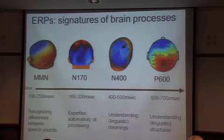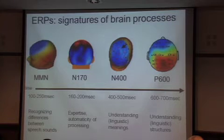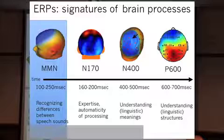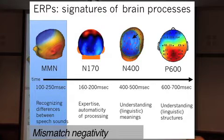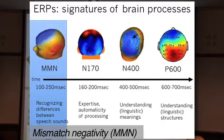These pictures of ERPs have been organized along a timeline that starts when some stimulus is presented. An early ERP — one that happens very soon in the processing stream — is one that we call MMN. It stands for mismatch negativity. The MMN happens around 100 milliseconds.